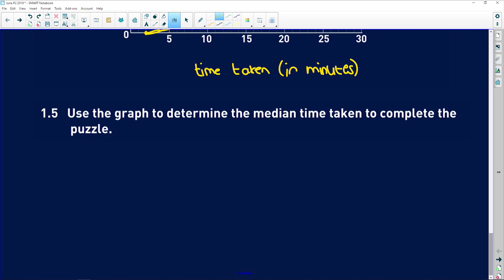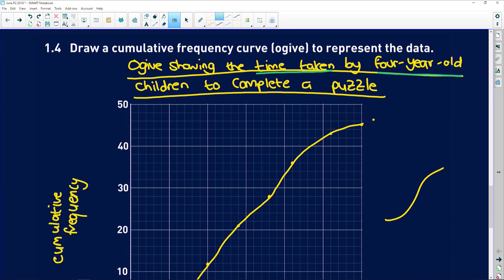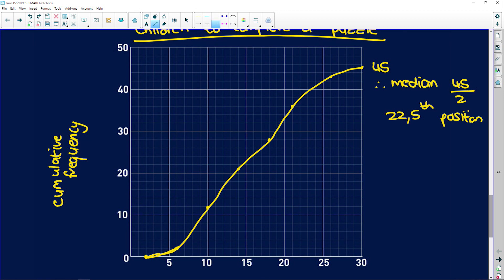Then 1.5 says use the graph to determine the median time taken. So that is the time that sits right in the middle. What you need to do is go and look at your total - remember the total was 45 - so therefore the median would sit halfway to your total, which is 45 over 2, which means it'll sit at the 22.5 position. Remember that's on your cumulative frequency. So what you need to do is go to your ogive. 22.5 would sit about here, so you go along from 22.5 to your graph and then you follow that value down to your x-axis, and it sits at around 15 minutes. So the median time taken is approximately 15 minutes.